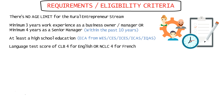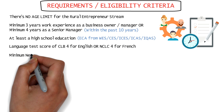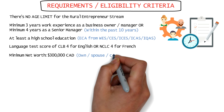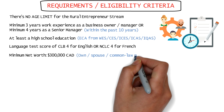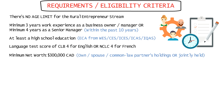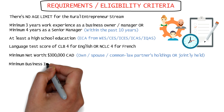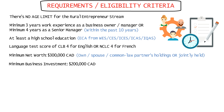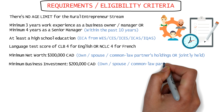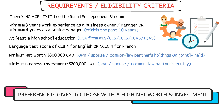You must have a minimum net worth of $300,000 Canadian dollars. Your assets can be in your own personal holdings, your spouse's or common-law partner's holdings, or jointly held by both of you. Your minimum business investment amount must be at least $200,000 Canadian dollars — it can be from your own equity or your spouse or common-law partner's equity. The higher your investment amount, the better your chances of getting accepted.